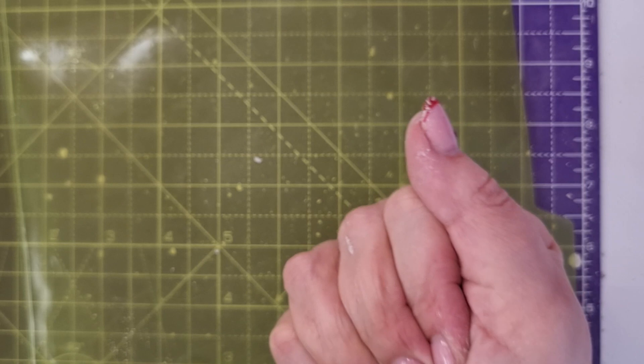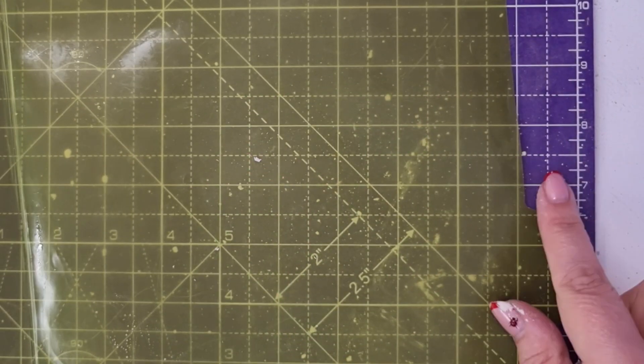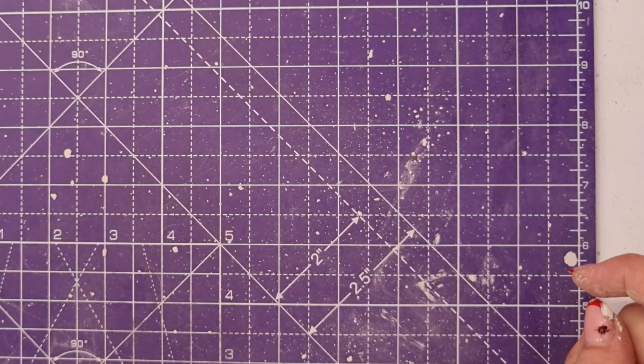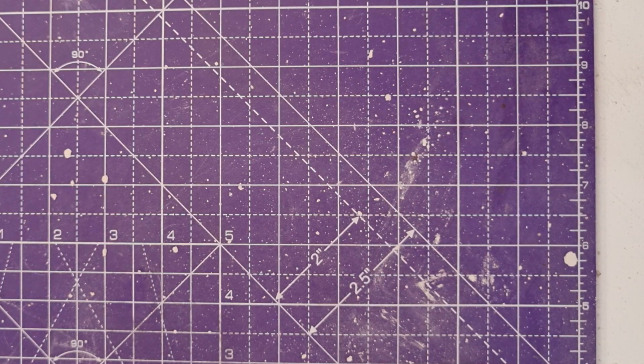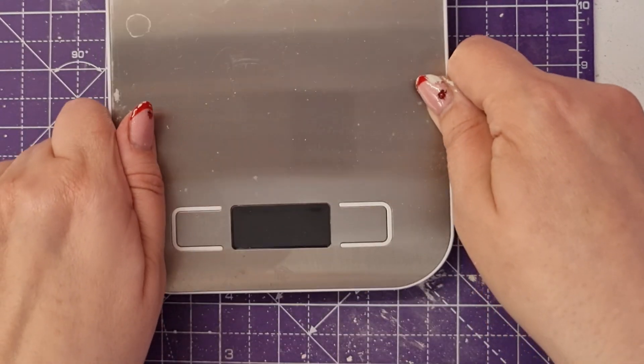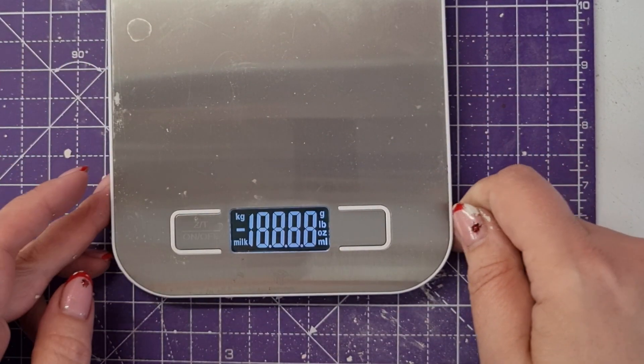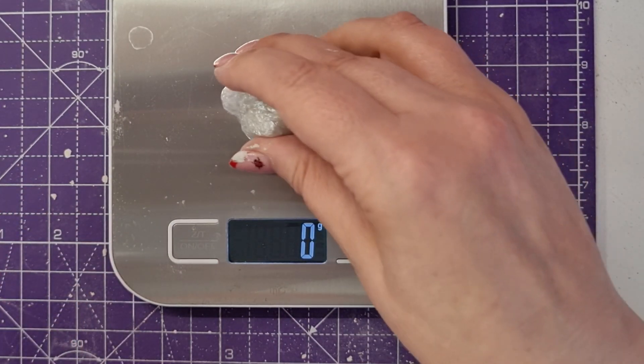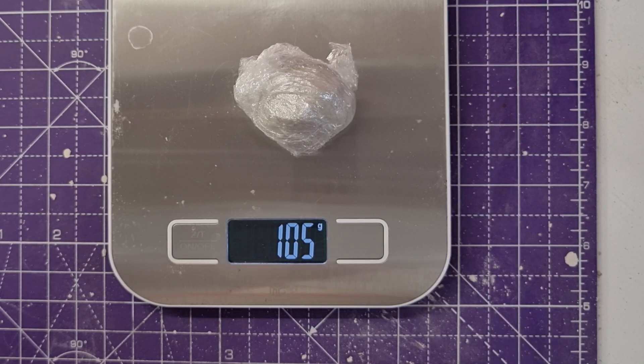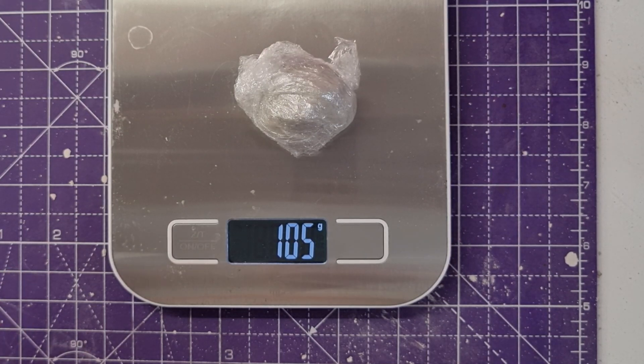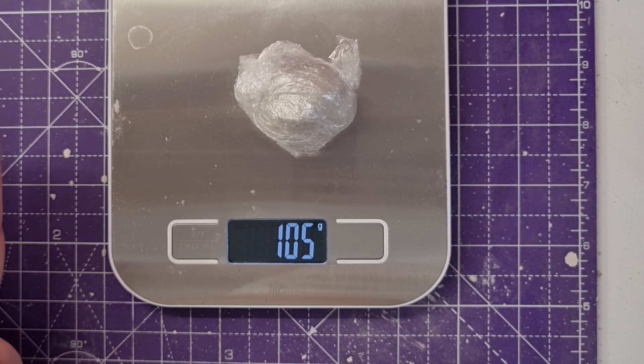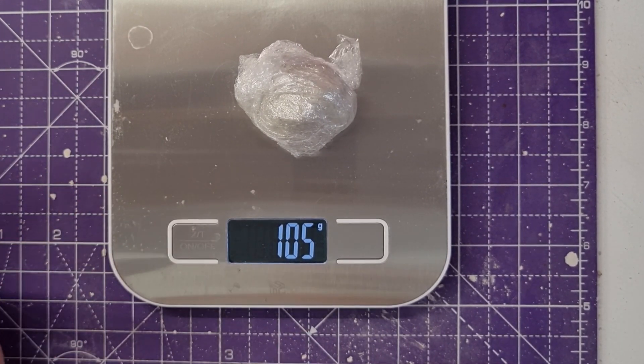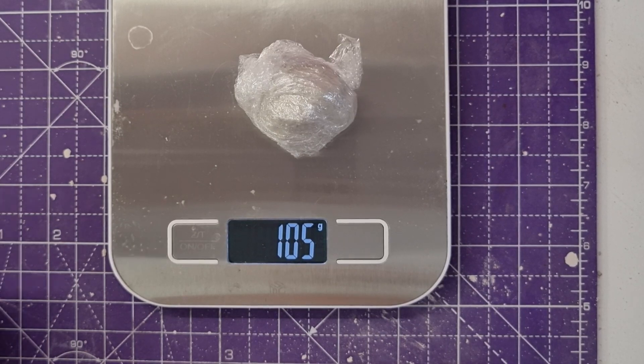If I bring a scale in to show you, that's 105 grams. So I started off with 100 grams of clay and I've got 5 grams of cellulose and water in there to bring that together.